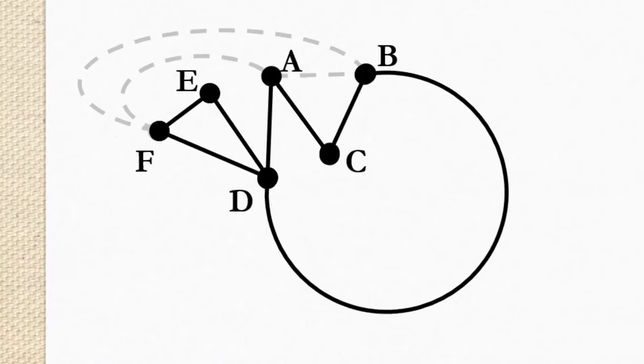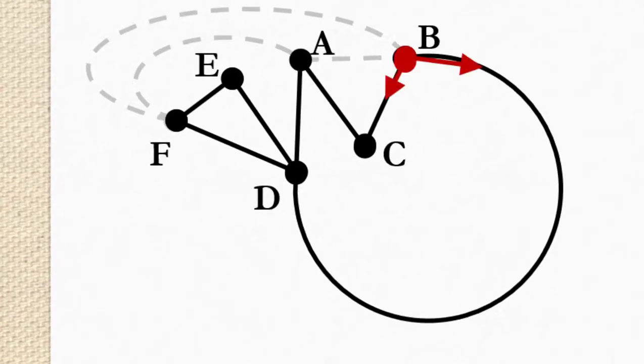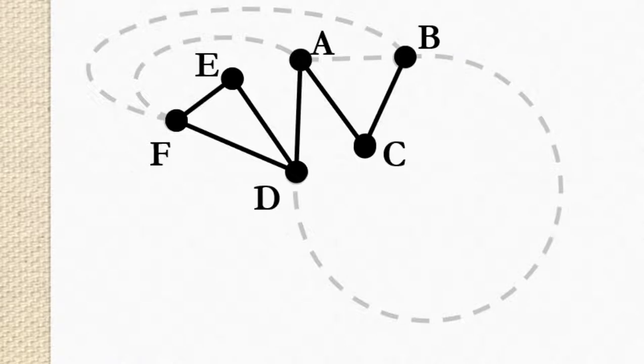So now from B where are we going to go? We have two options. We can go towards D or towards C. Once again neither of these looks like a cut edge so I'm going to pick D. You could pick C if you wanted to but I picked D.